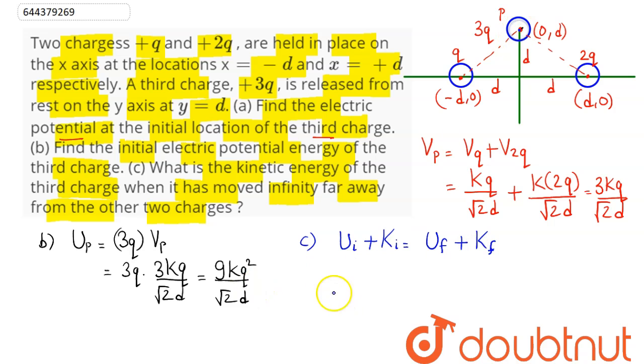For this 3q charge, initial potential energy is 9kq square divided by root under 2d. Initial kinetic energy is 0 since it is initially at rest.